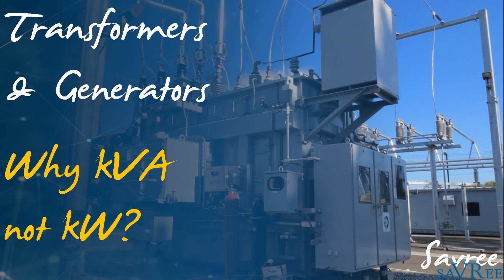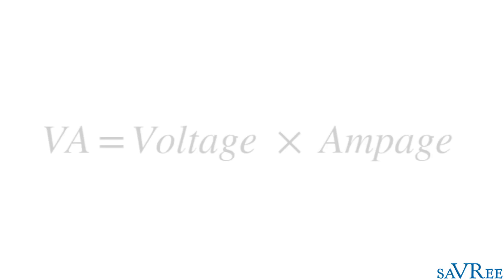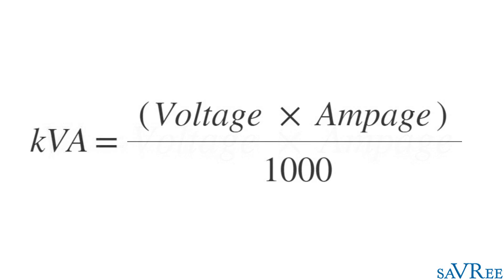In order to understand the problem, let's take a look at the equations associated with voltage ampere and watts. Voltage ampere equals the voltage multiplied by the ampage. Kilo voltage ampere equals the voltage multiplied by the ampage divided by a thousand.